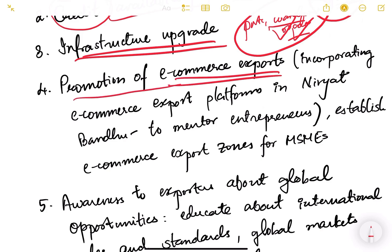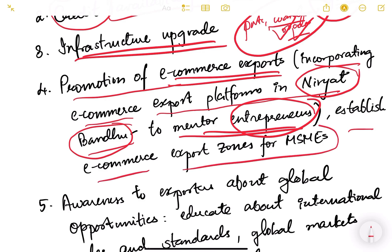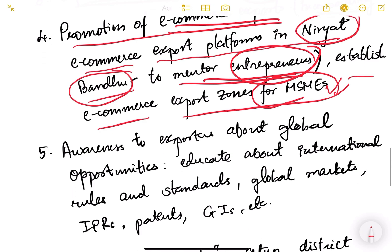E-commerce exports should be promoted. Incorporating e-commerce export platforms in Niryat Bandhu — a government platform to mentor entrepreneurs — would be beneficial. It gives guidelines and lessons to entrepreneurs on how to export and how to be globally competitive. Until now, e-commerce platforms were not part of it, but they can be incorporated into Niryat Bandhu so that they also get training. We also need to establish e-commerce export zones for MSMEs doing online business.